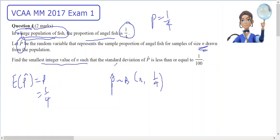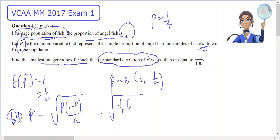Find the smallest value of n such that the standard deviation... My standard deviation of p-hat will be the square root of p times one minus p over n, which is the square root of one quarter times three quarters over n, which is the square root of three over 16n. And we want that standard deviation to be less than or equal to one over one hundred.